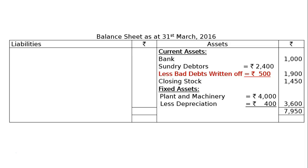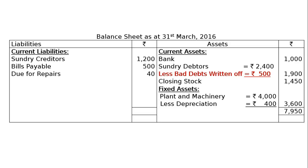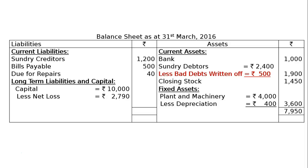Liability side — current liabilities: sundry creditors rupees 1,200; bills payable rupees 500; due for repairs (outstanding) rupees 40 — shown as a current liability. Long-term liabilities: capital rupees 10,000 less net loss rupees 2,790 less drawings rupees 1,000, giving a final capital figure of rupees 6,210. The total of the liability side of the balance sheet is rupees 7,950, confirming the balance sheet balances.